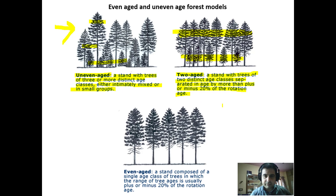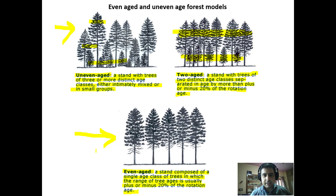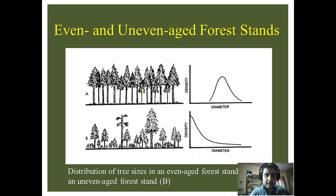The difference in rotation age must be 20 percent. A third model is even-aged: a stand composed of a single age class of trees where the range of tree ages is usually plus or minus 20 percent of the rotation age. It is a single tier of trees wherein the difference in age must not exceed 20 percent, and it looks uniform in size and age.